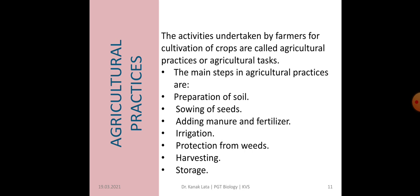Now let us see about the agricultural practices. Agricultural practices means those activities which are undertaken by the farmers for cultivation of crops. The main agricultural practices are: preparation of soil, sowing of seeds, adding manure and fertilizer, irrigation, protection from weeds, harvesting, and storage. Here we are going to discuss the first four — preparation of soil, sowing of seeds, adding manure and fertilizer, and irrigation.